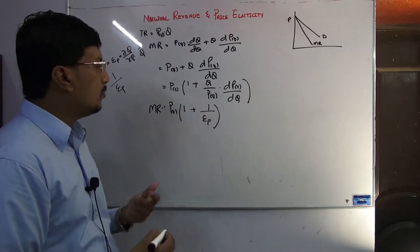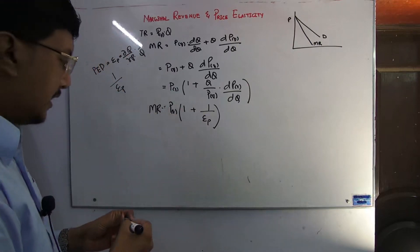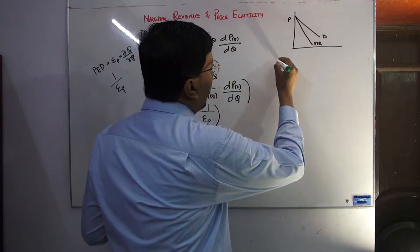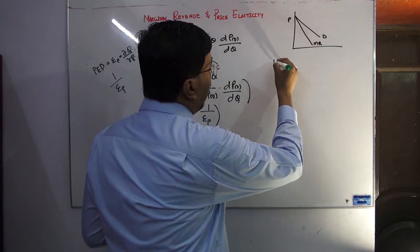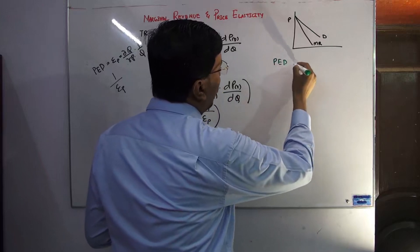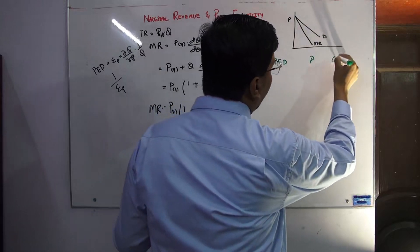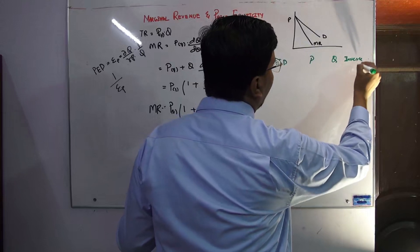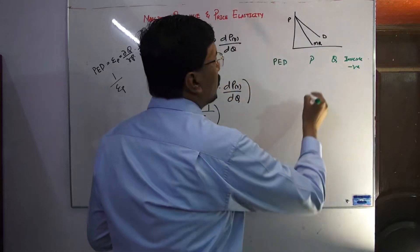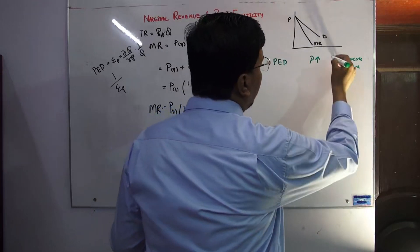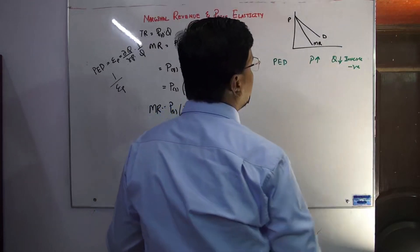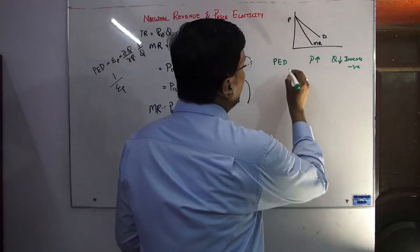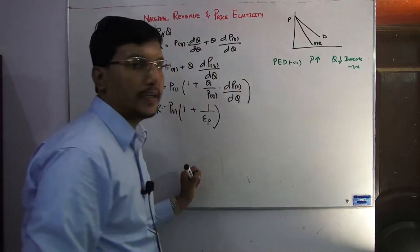We can say that marginal revenue equals price times (1 + 1/e), where e is the price elasticity of demand. Let us further evaluate what situations can arise. Price elasticity of demand is negative — if price goes up, quantity comes down — so PED will always be a negative value.